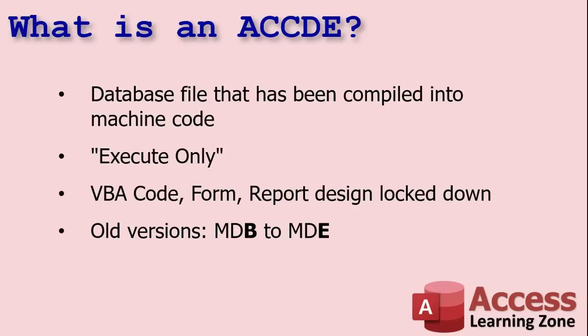What is an ACCDE file? Basically, you take your ACCDB database file that you've been working on and you want to distribute it, so you create an ACCDE file. Access will compile it into machine code, making it execute only. That means people can't get their hands on your VBA code — your form design, your report design, your modules are all locked down.